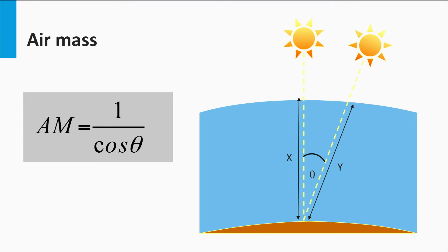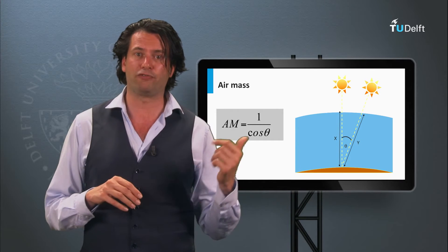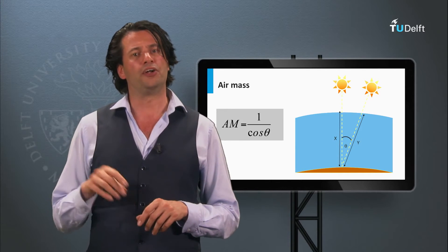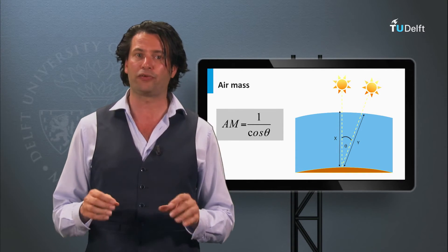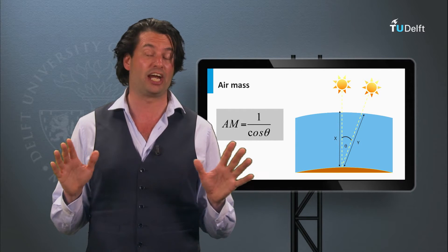The path length of light is defined by the optical air mass. An air mass of 1 corresponds to the smallest possible path length, which is the path length at the equator. An air mass of 1.5 means the absorption path length is 1.5 times larger than at the equator. The air mass can be calculated by the formula 1 over cosine theta, where theta is the latitude in degrees. An air mass of 1.5 corresponds to the average path length at a latitude of 48.2 degrees at noon, ignoring the seasons.